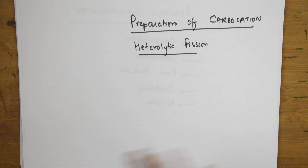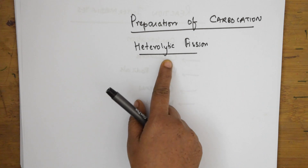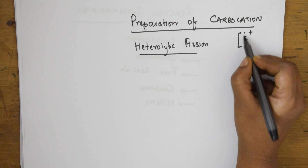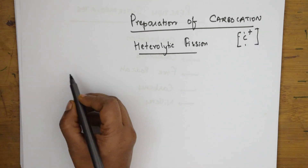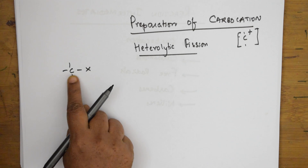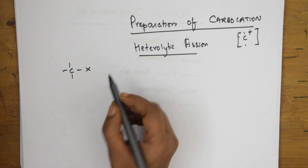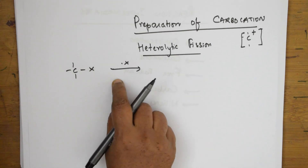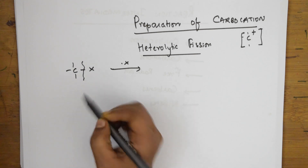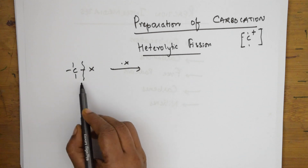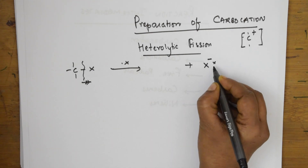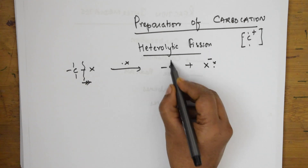Homo means two equal halves — both atoms will be similar. In heterolytic, both atoms will be different. So to form carbocation — which is denoted as C⁺ — in heterolytic fission, for example, if I take a C–X bond, it is heterolytic because two atoms are different. When fission happens here, the halogen is highly electronegative; it will try to drag the electron density towards itself. When it drags, it pulls up the shared pair of electrons.